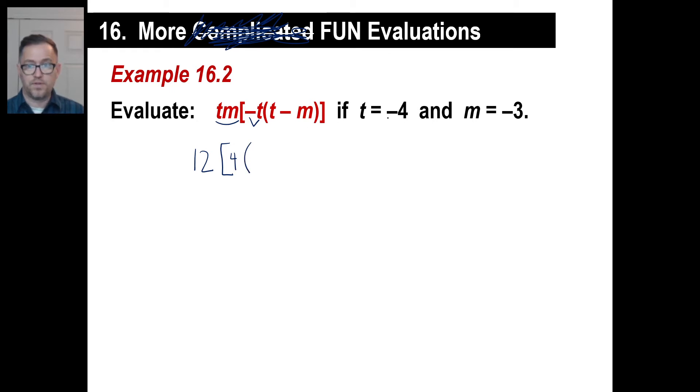We have here the opposite of t. Well, the opposite of the negative 4 will be 4. Parenthesis. T itself is in negative 4, so we'll just put negative 4. And let's go ahead and put the opposite of m here. Well, the m is negative 3. The opposite of m will be positive 3. Parenthesis, end bracket.